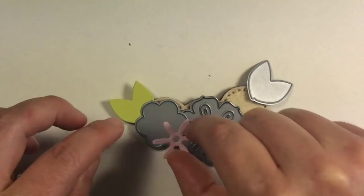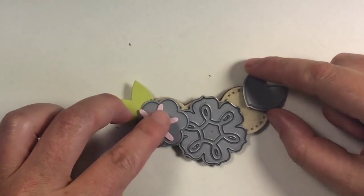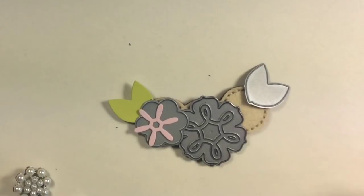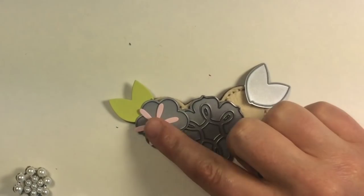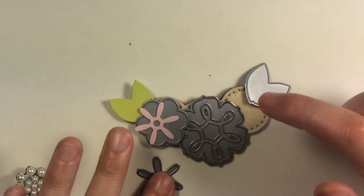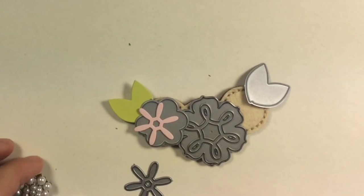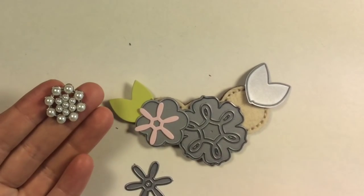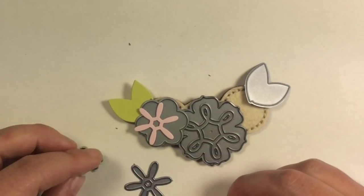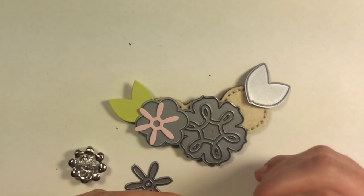In the supply list we ask that you go get yourself some blingy buttons and I did specify shankless but they're a little tough to find. So if you did get shanked buttons which means they have that loop on the back, they're pretty easy to deal with.